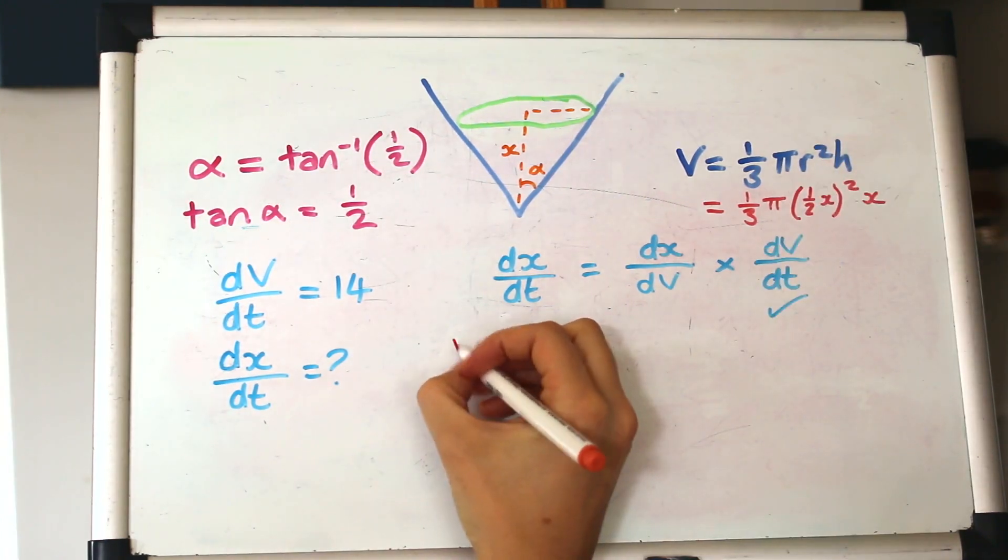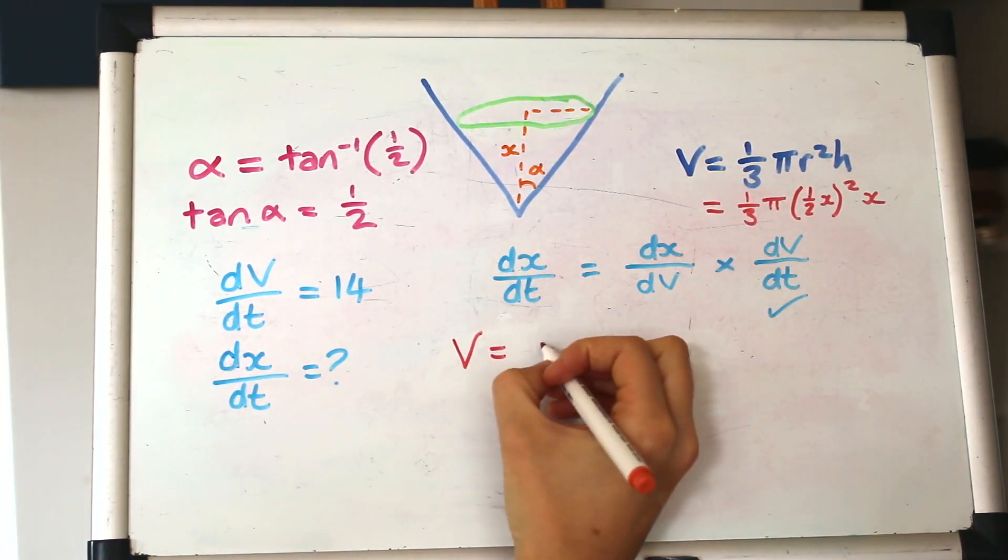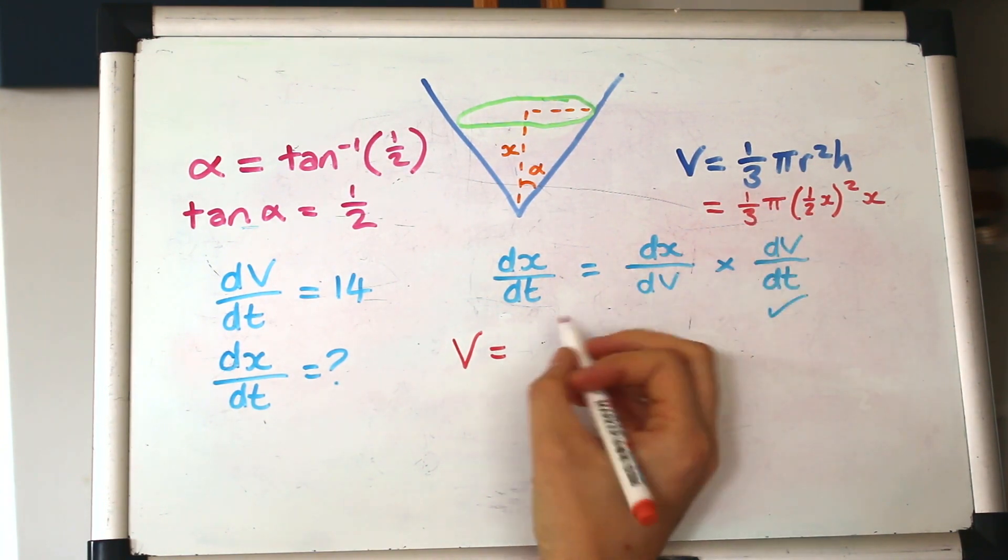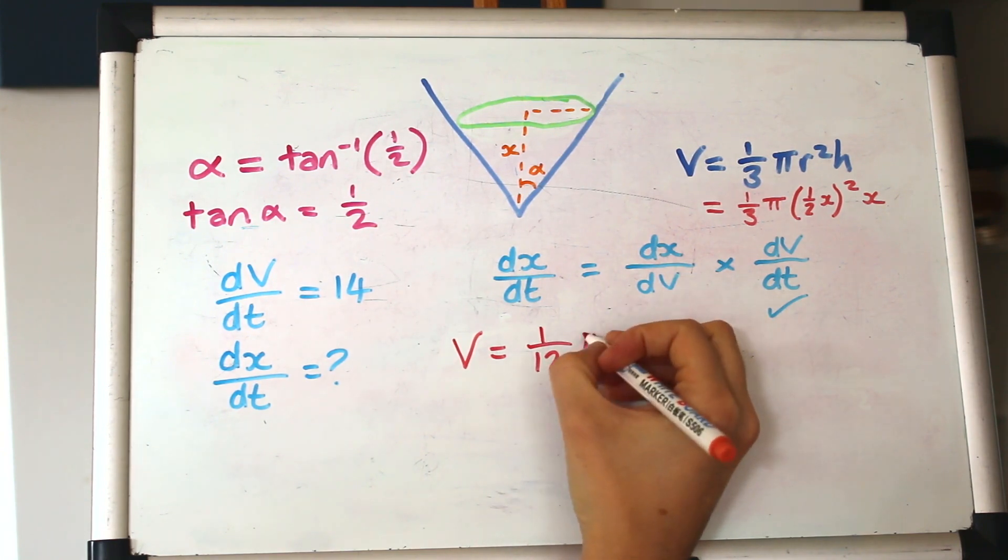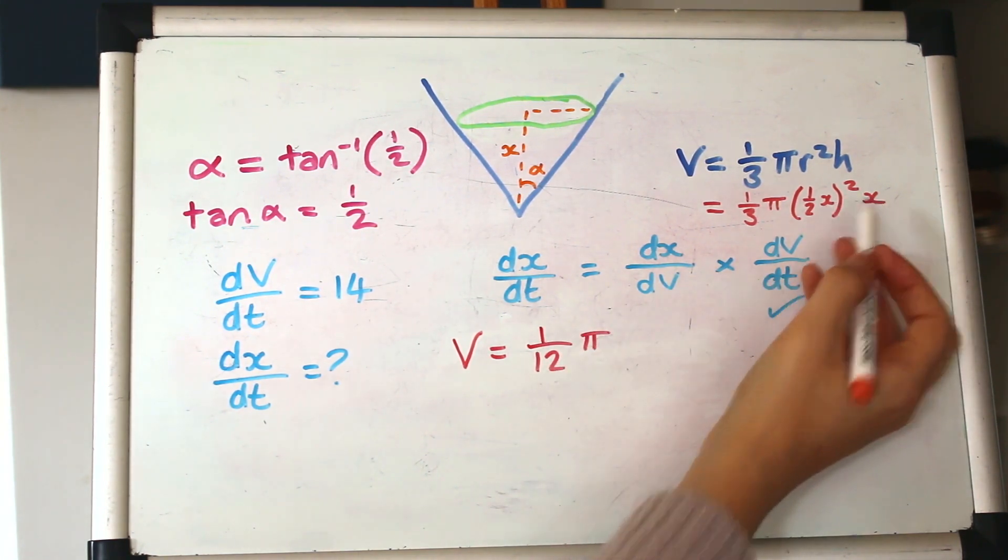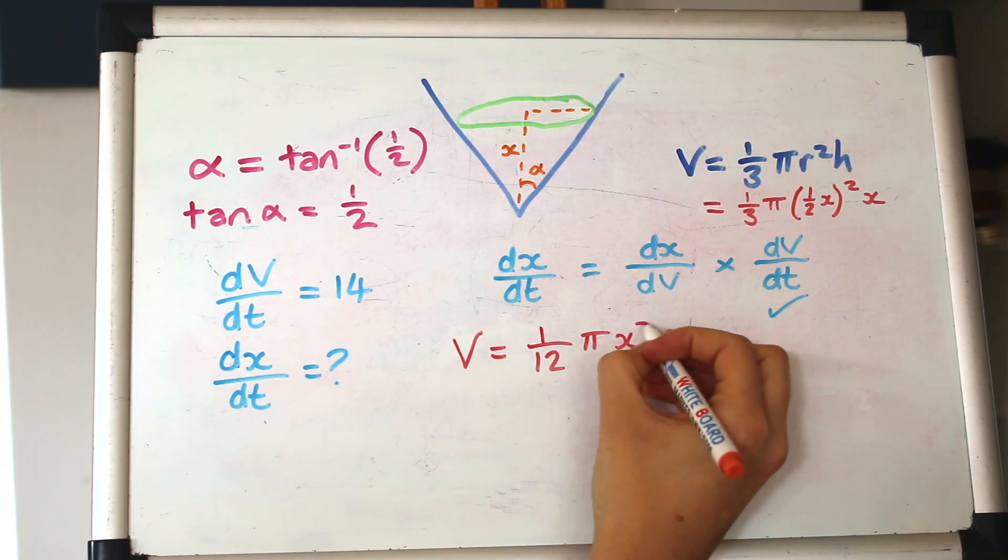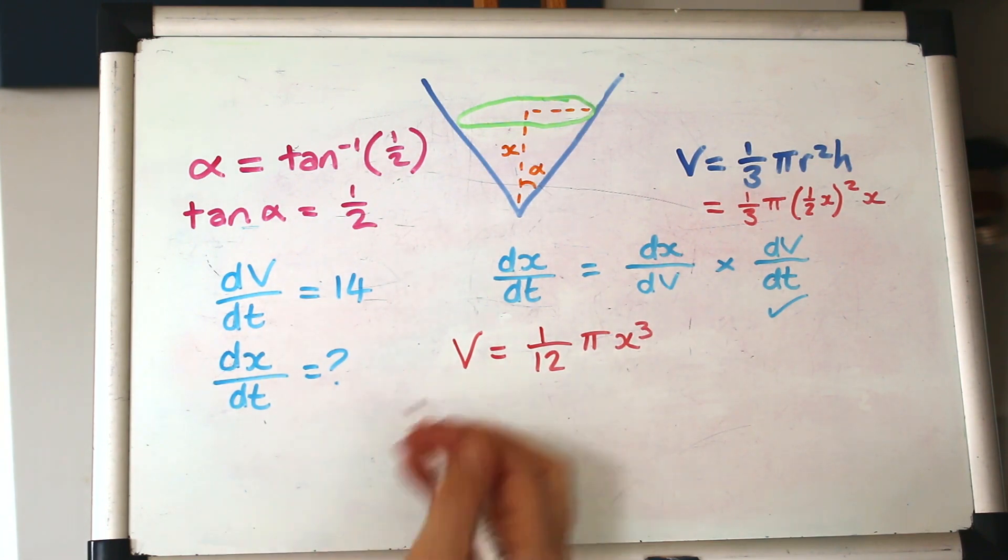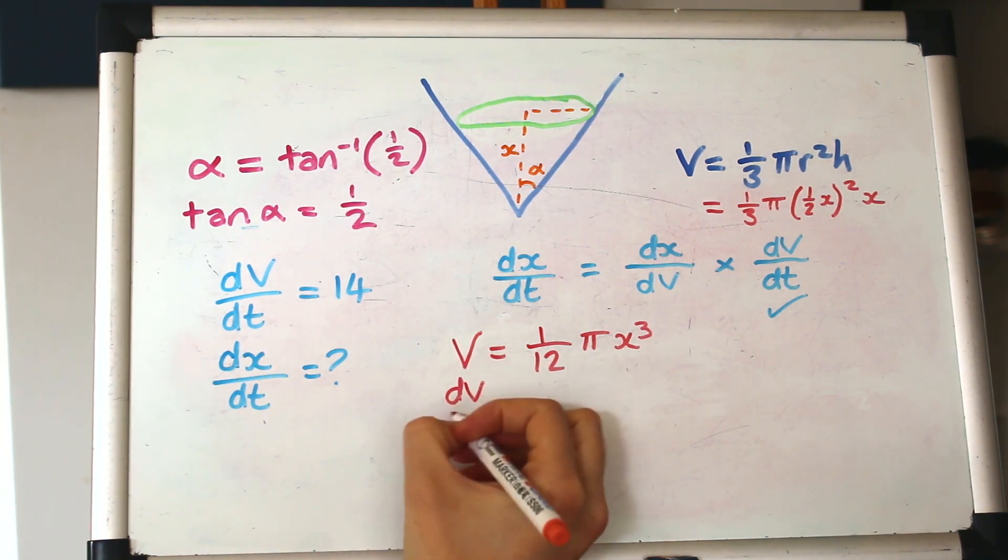Just squeezing this in here, r is a half x. And that's being squared, and then h is x again. Okay, just bringing that down to this space here, we've got V is where we square half, we'll have a quarter, and times that by a third, so a 12th. And then we'll have x squared times x again, so x cubed. Great, now we've got this formula that links V and x, and we can differentiate it to get dV by dx.